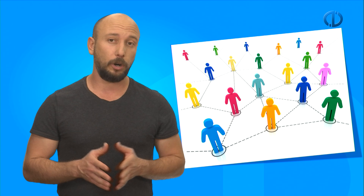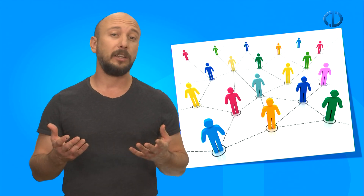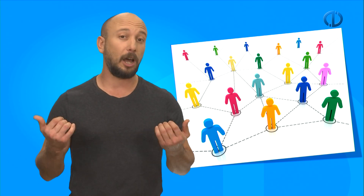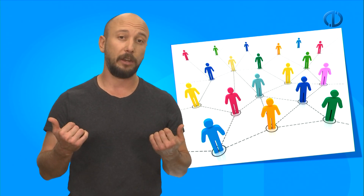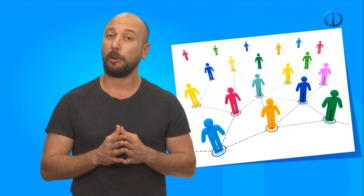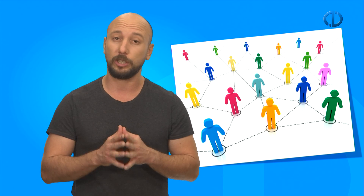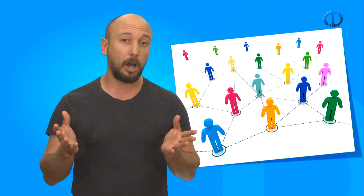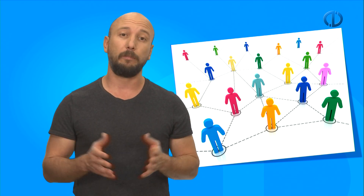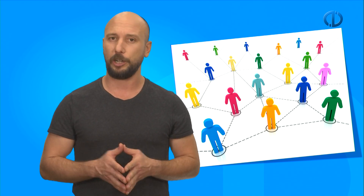In the dynamic network, independent companies along the value chain form temporary alliances from among a large pool of potential partners.